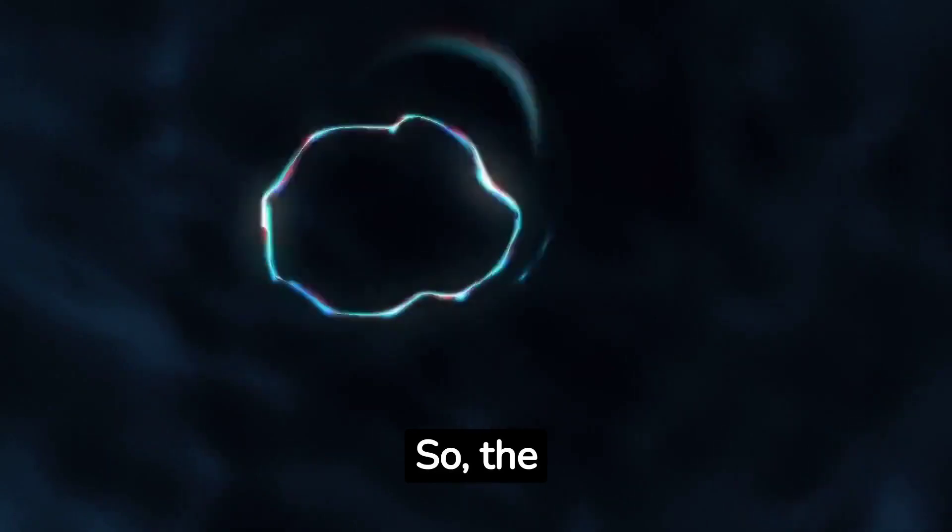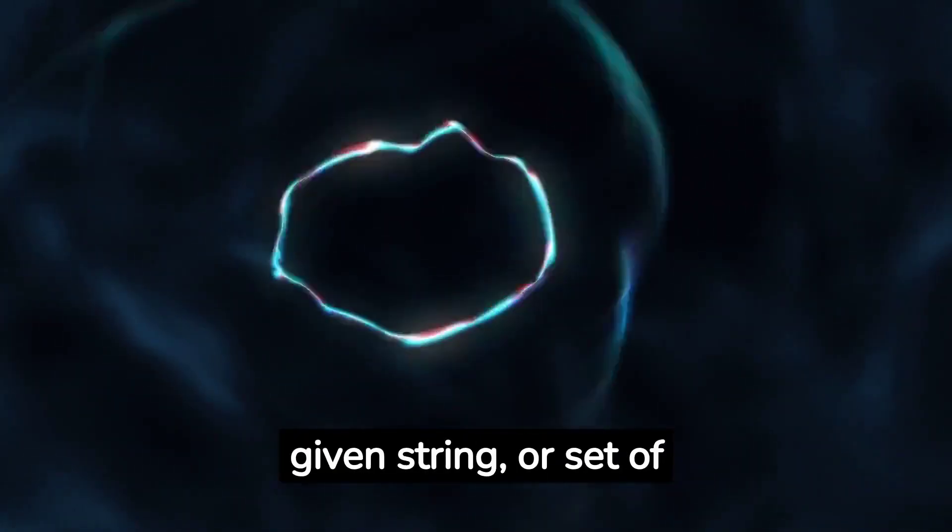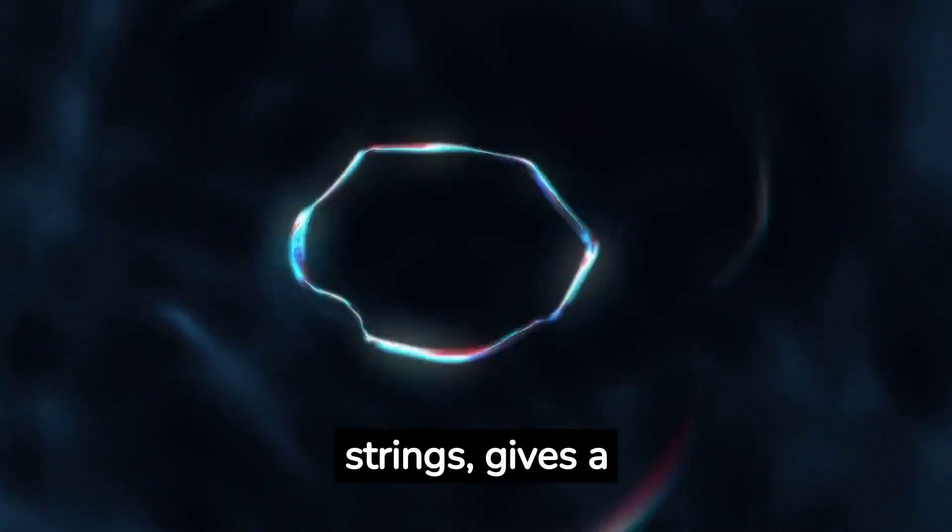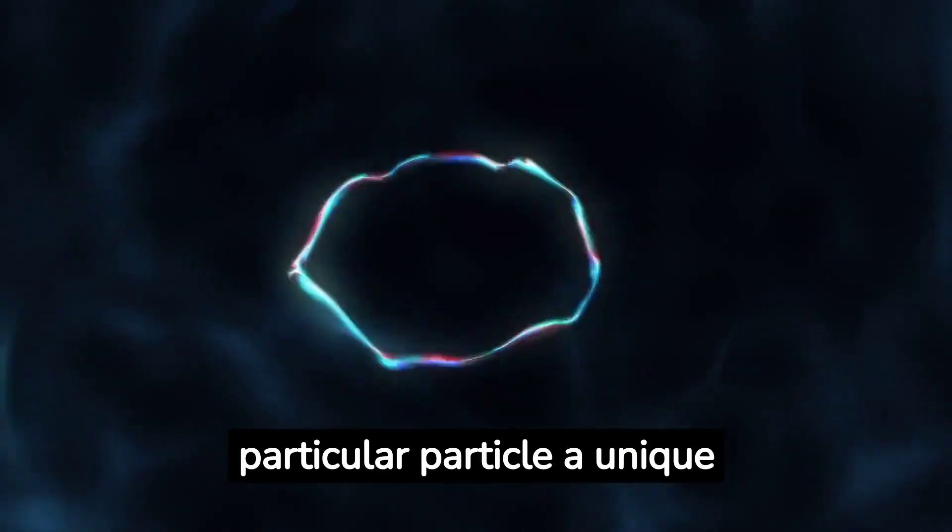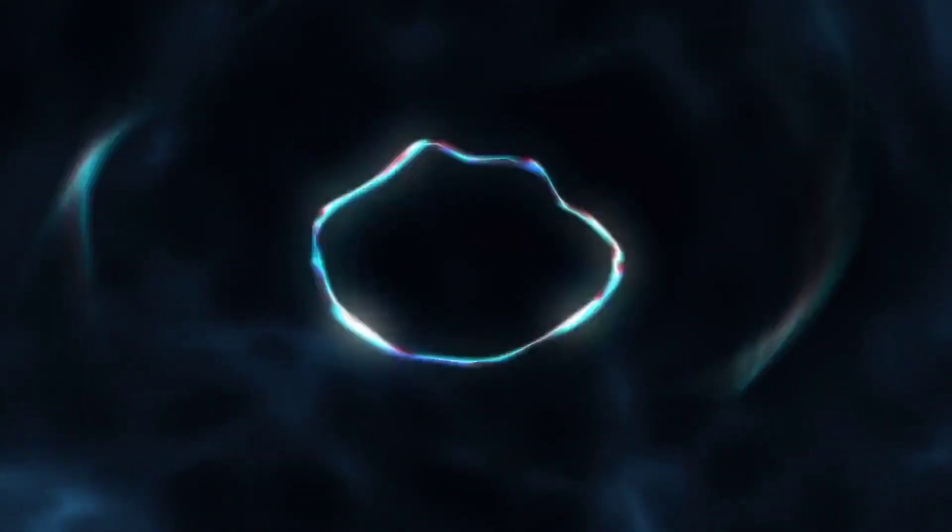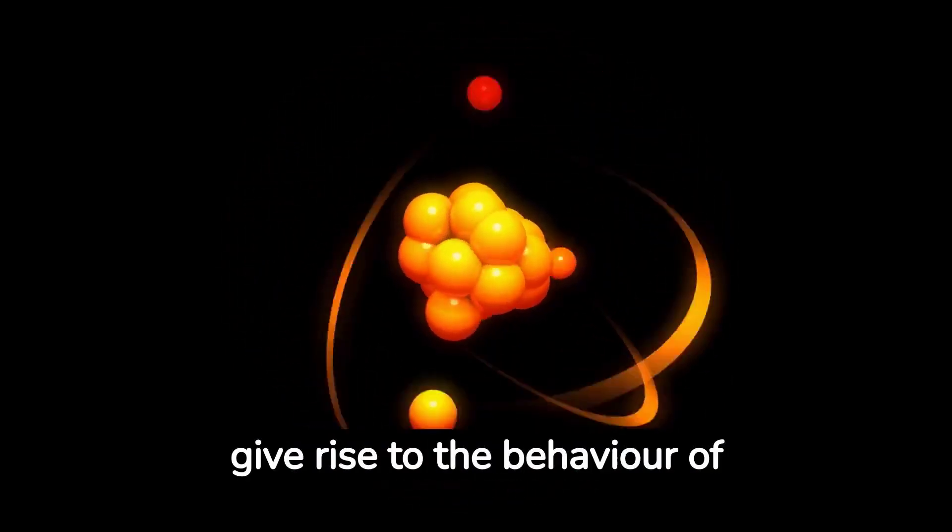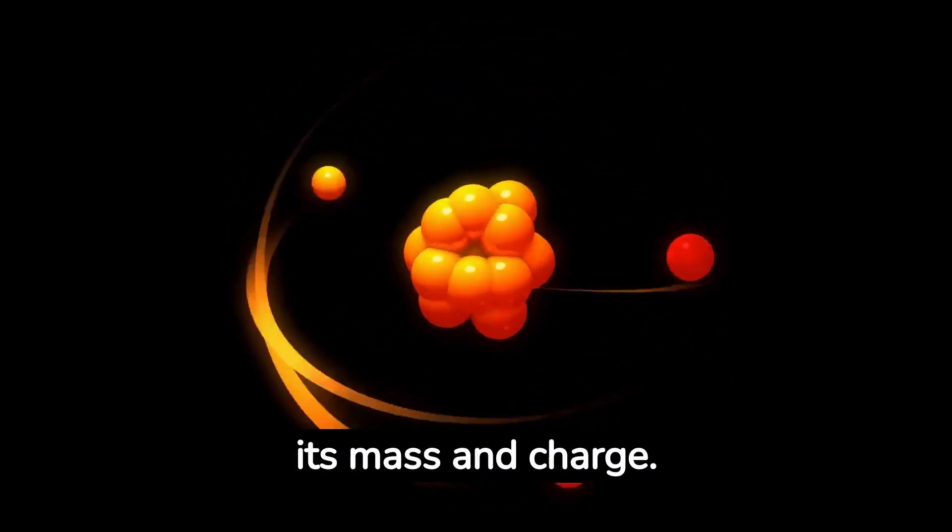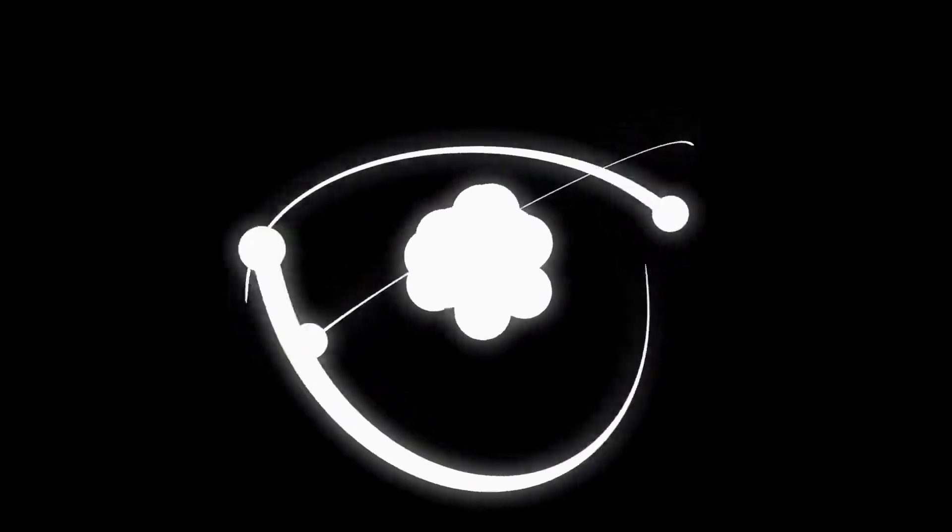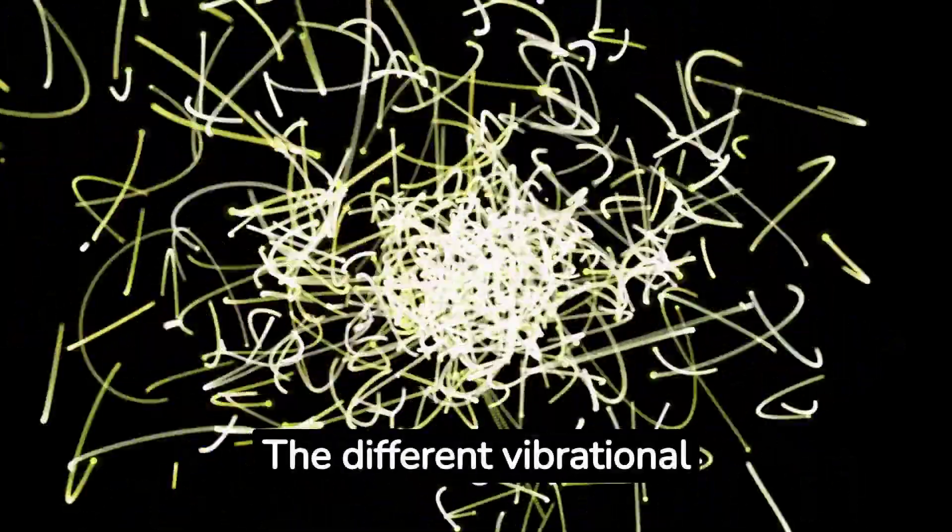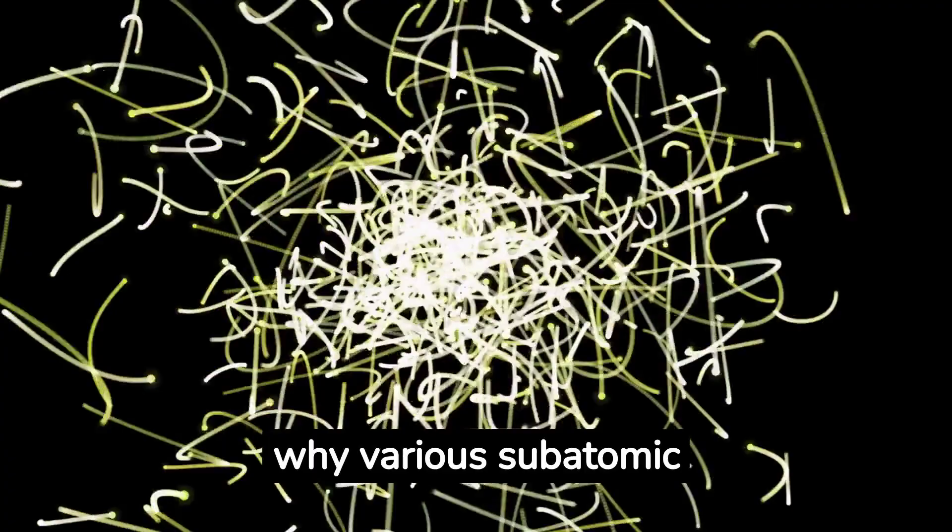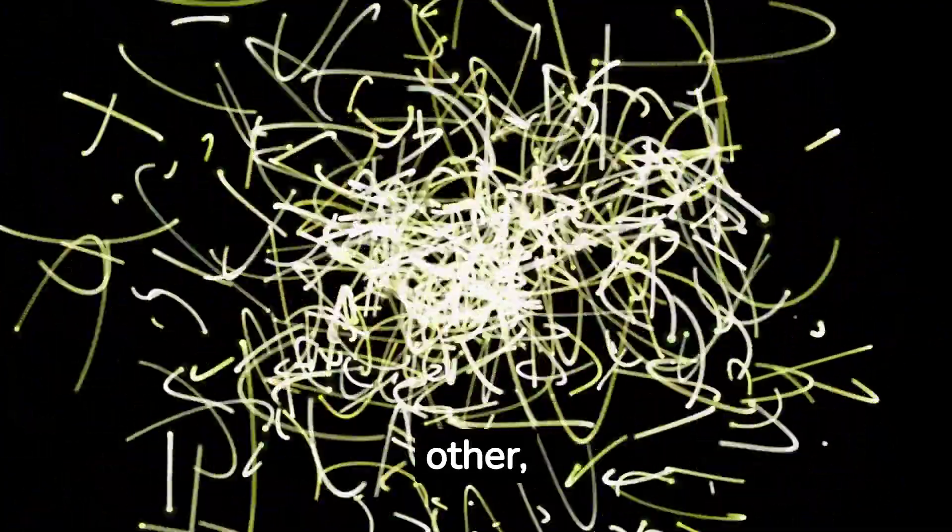So, the vibrational frequency of a given string, or set of strings, gives a particular particle a unique set of characteristics. These characteristics give rise to the behavior of the particle, such as its mass and charge. The different vibrational frequencies thus explain why various subatomic particles differ from each other.